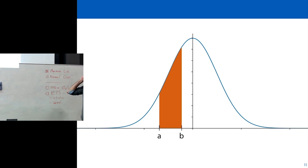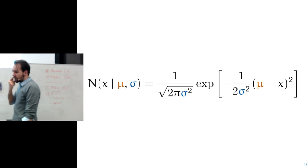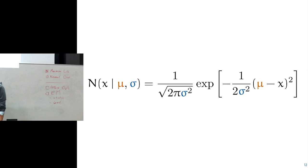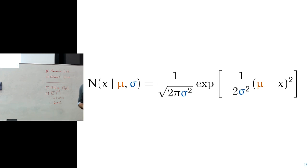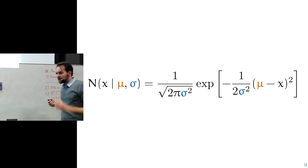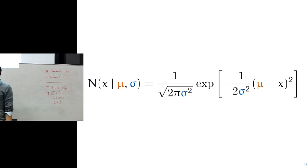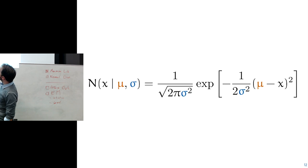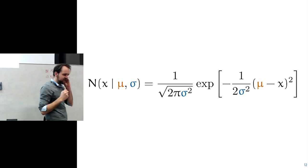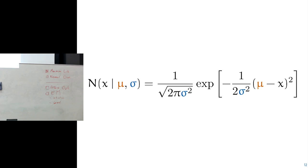With that in mind, we can look at the function that describes the probability density of the normal distribution. It's a very intimidating looking function at first. We have the mean and the variance as parameters. The first thing to do is look at this formula step by step, see where it comes from, what all the different parts do, and hopefully see that it's not quite as spooky as it looks.